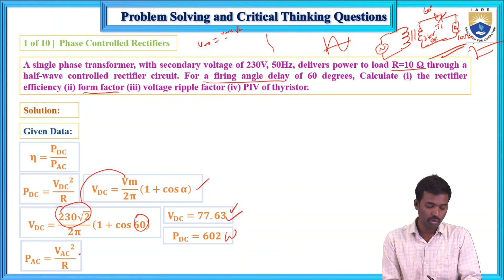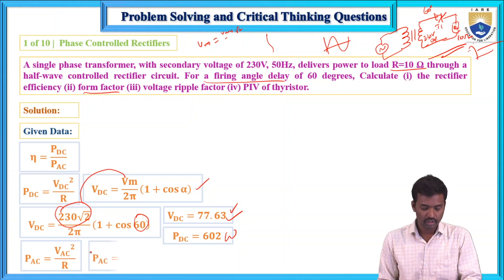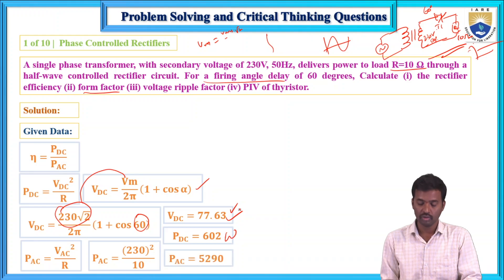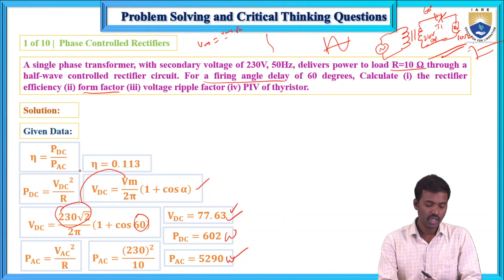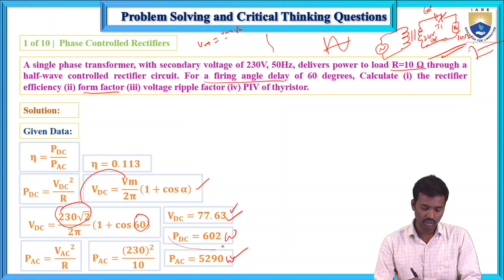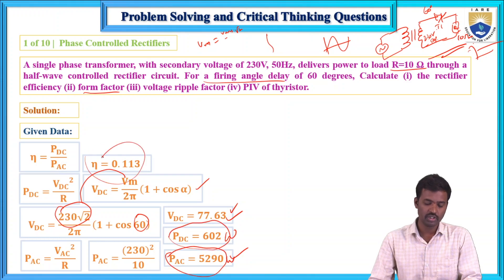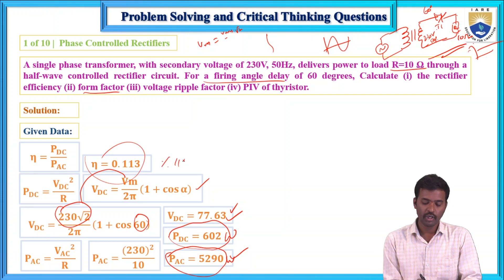The AC input power equals V_AC squared divided by R, which is 230 squared divided by 10, giving PAC equals 5290 watts. Substituting into the efficiency formula: efficiency equals PDC divided by PAC, which gives efficiency equals 11.3 percent.